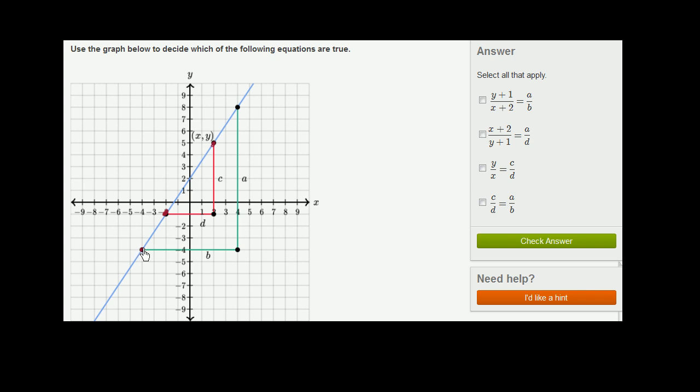If you're starting at this point and going to that point, side b is your horizontal change, and side a is your vertical change.